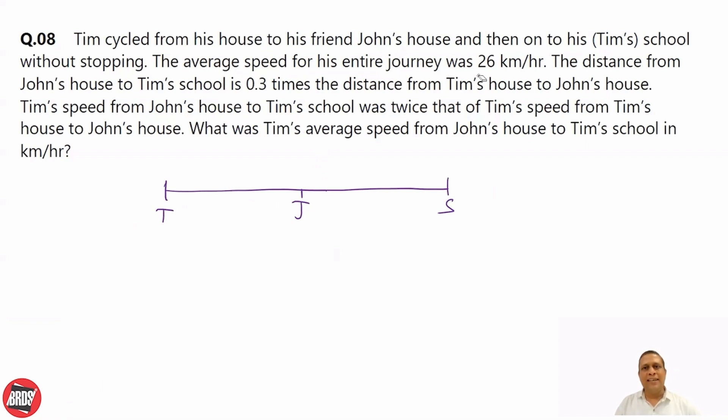The average speed for the entire journey is 26 km per hour. We know the formula for average speed is total distance divided by total time.